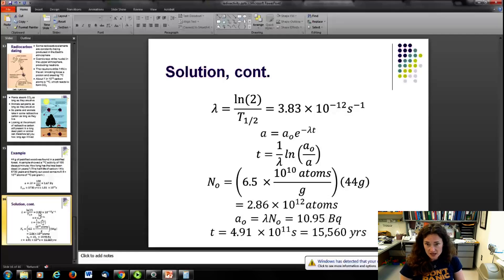Now, in order to do that, we need to go ahead and solve for our activity at time t equals 0. So if we do that, we have 6.5 times 10 to the 10th atoms per gram in wood, that's carbon-14, and you multiply that times 44 grams, and that would give you, at time t equals 0, 2.86 times 10 to the 12 carbon-14 atoms. And then if you multiply that times the decay constant to get the initial activity, you have A naught equals lambda N naught gives you 10.95 becquerels. So now we have A naught, we have A, and we can solve for t, given lambda, plugging it all into that equation 1 over lambda natural log of A naught over A, and we get t equals 4.9 times 10 to the 11th seconds, which would give you, in years, 15,560 years.